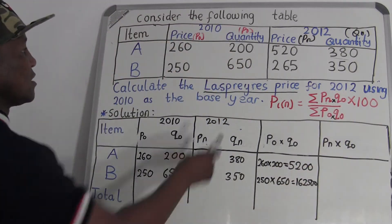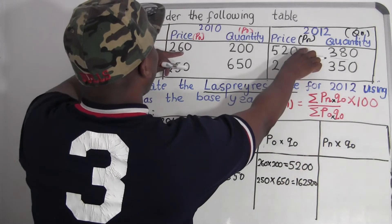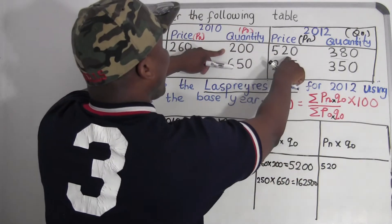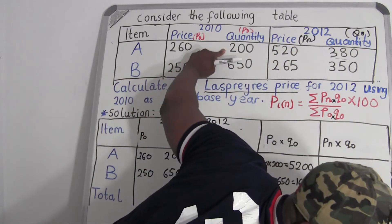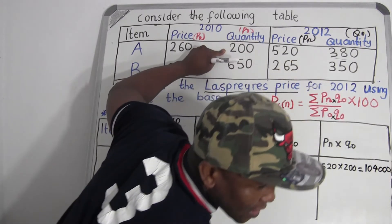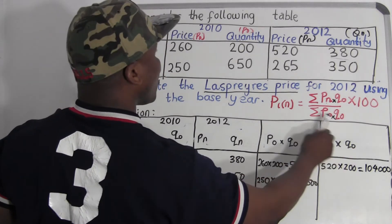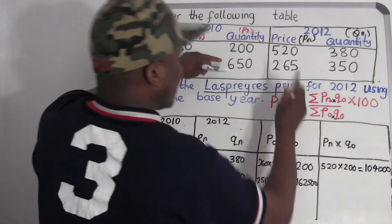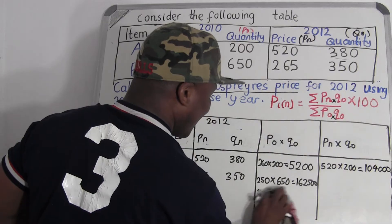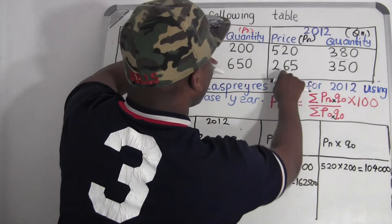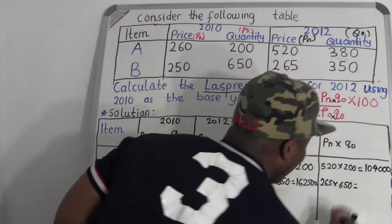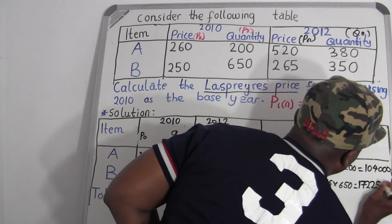Now we go for pₙ times q₀. For Item A: pₙ is 520 times q₀ of 200, which gives 104,000. For Item B: pₙ is 265 times q₀ of 650 — my apologies for the earlier error — 265 times 650 equals 172,250.